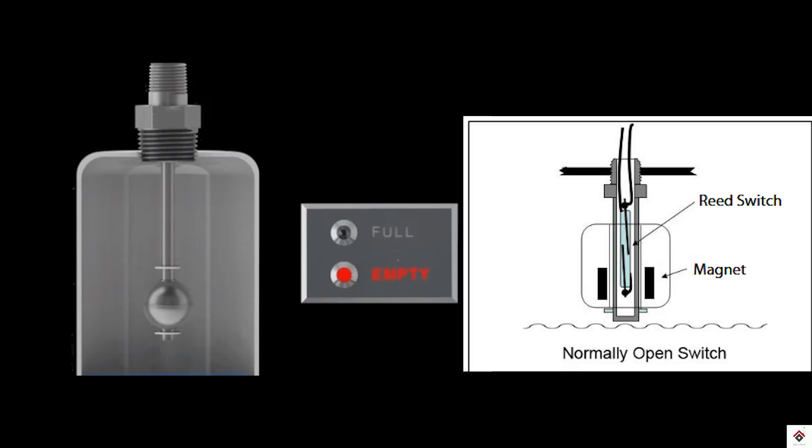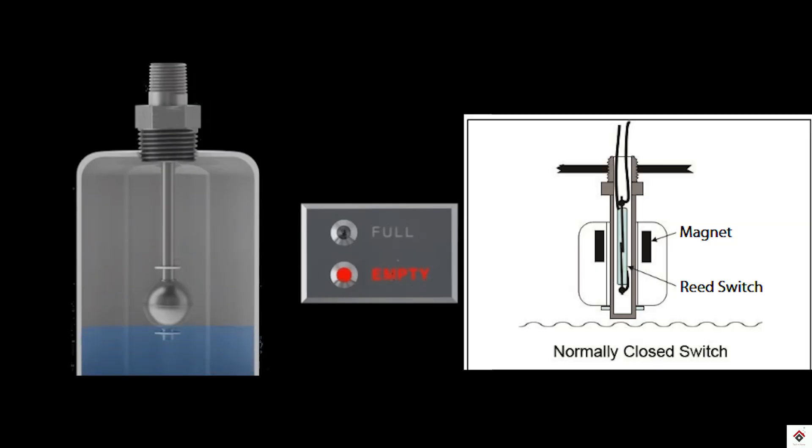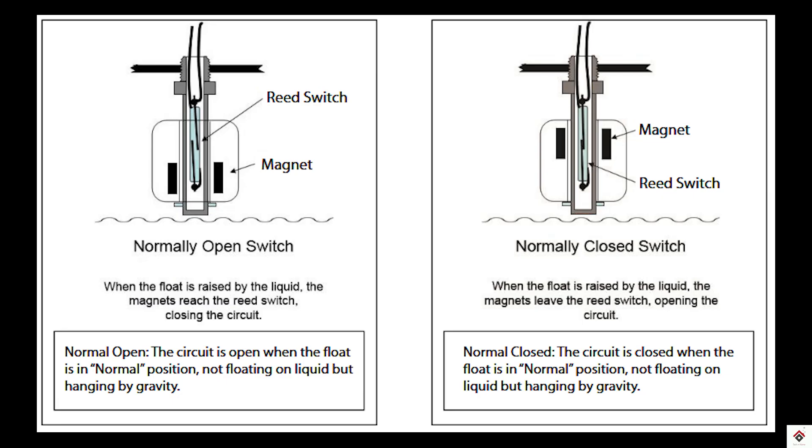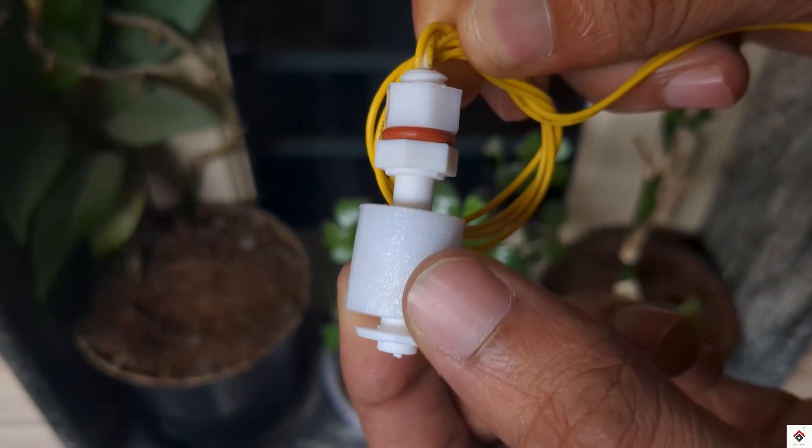When the liquid level rises, the float goes to the top. In this case, the reed switch will be in the on state. So in this way, using two different states, zero and one, you can easily detect the change in the liquid level. This is the basic working principle of the sensor.